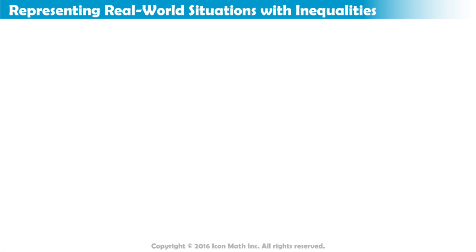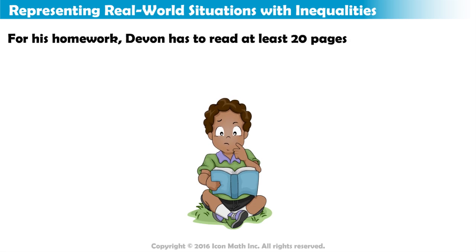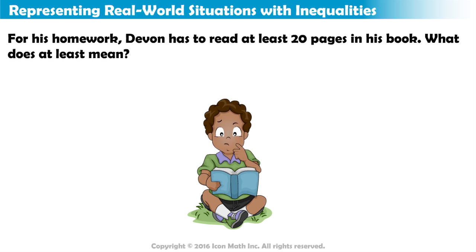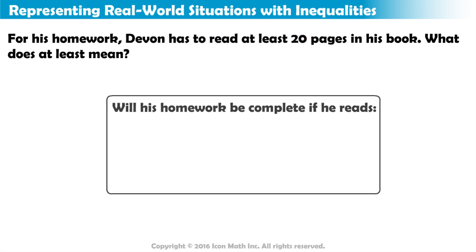Let's try one more example. For his homework, Devin has to read at least 20 pages in his book. What does 'at least' mean? In order to complete his homework, Devin must read at least 20 pages. Will his homework be complete if he reads 15 pages?